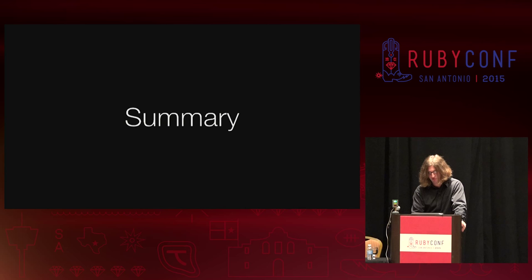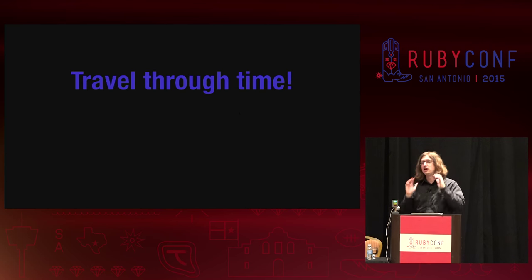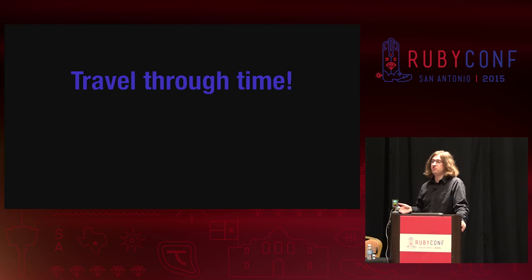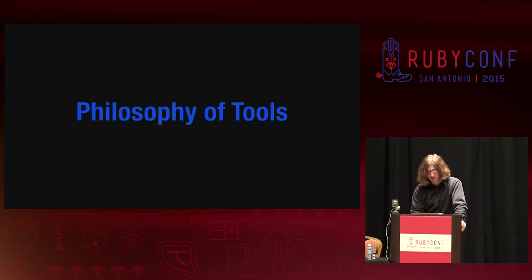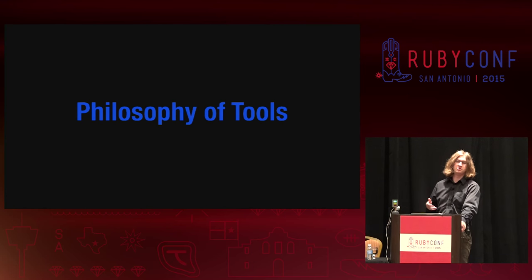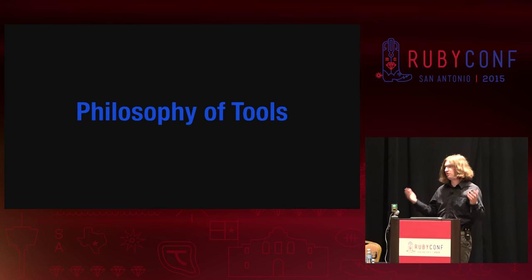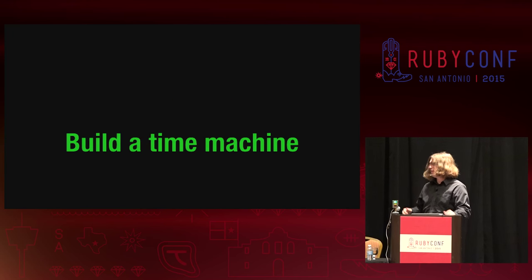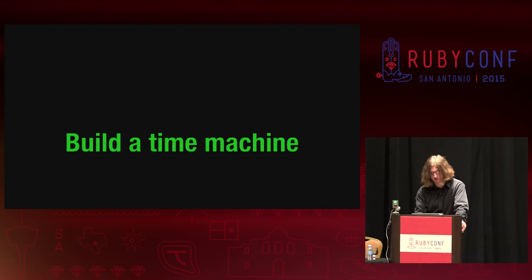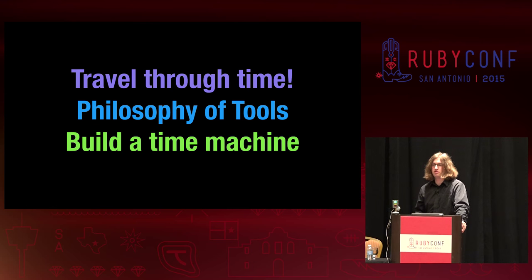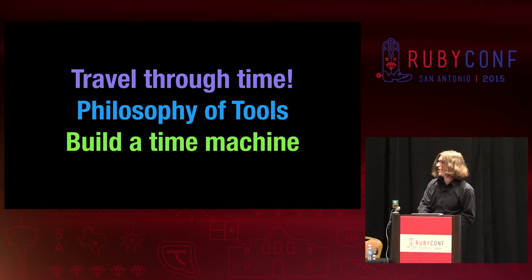So in summary, what this talk is going to be: first, we're going to travel through time and look at text editors throughout history. Then we're going to talk about the philosophy of tools — why development tools look the way they do and why the UIs for development tools are so different from the UIs we create for, say, web commerce products. Finally, we're going to spend some time building a time machine, since most text editors have a time machine in them. If these slides ever get too hard to read, just shout at me and I can change the colors to something much uglier.